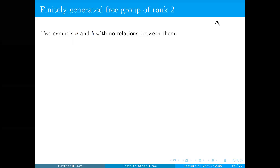As promised, we are going to look at a simple random walk on F2, namely the free group of rank 2. But since I'm not sure if it has been covered formally in your algebra courses, I'll anyway introduce this group. This would be a very nice example to present. So suppose you have two symbols, A and B, with no relations between them.